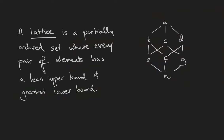Finally, a lattice is a partially ordered set where every pair of elements has a least upper bound and a greatest lower bound. An example of our sort of cubic lattice like the power set of a three element set is shown.